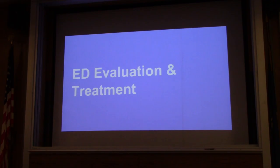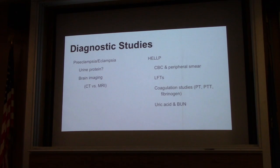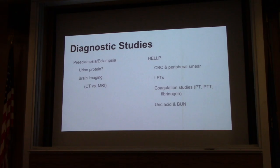Going over ER evaluation and treatment. Certain diagnostic studies — if you suspect a woman to have preeclampsia or eclampsia, you can obtain a urine protein to aid in your diagnosis. In the ER you're not going to collect a 24-hour urine protein; the urine dipstick is a good surrogate. If it's one plus, that roughly correlates with at least about 300 milligrams, which is necessary for diagnosis. Unfortunately, the absence of protein doesn't always rule out the diagnosis of preeclampsia or eclampsia. In one study of about 383 patients, 30% of the patients who turned out to have eclampsia had no proteinuria or hypertension. So just because a patient doesn't have it doesn't mean she doesn't have eclampsia or preeclampsia.